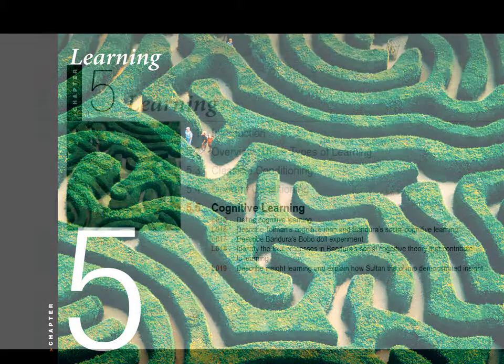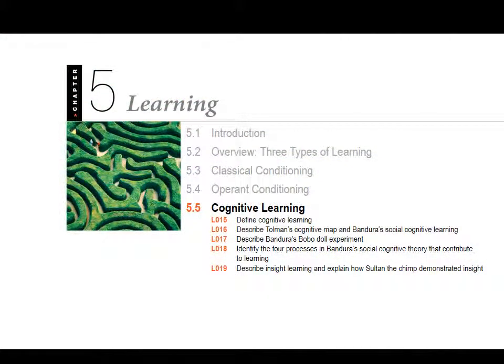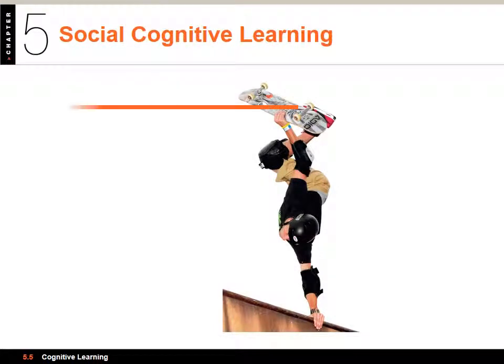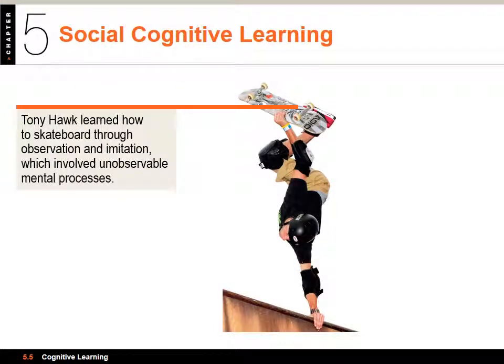It's called cognitive learning — more to the point, it's called social cognitive learning. Tony Hawk, a famous skateboard artist, learned how to skateboard through observation and imitation, which involved unobservable mental processes.